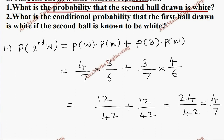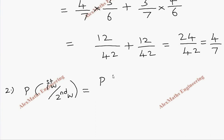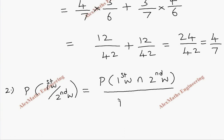Now coming to the second part of the question — they want the conditional probability that the first ball drawn is white, given that the second ball is known to be white. So we write the formula: P(first white | second white) = P(first white ∩ second white) divided by P(second white).